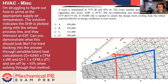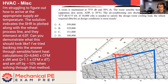So let's read the question. A room is maintained at 75 dry bulb and 50% RH. The room sensible heat ratio is 0.66, which corresponds to an apparatus dew point, or ADP, of 38. The air conditioning unit discharge air temperature is 51 dry bulb, 51 wet bulb. If 10,000 CFM is needed to satisfy the design room cooling load, the reheat required at design conditions is most nearly what?